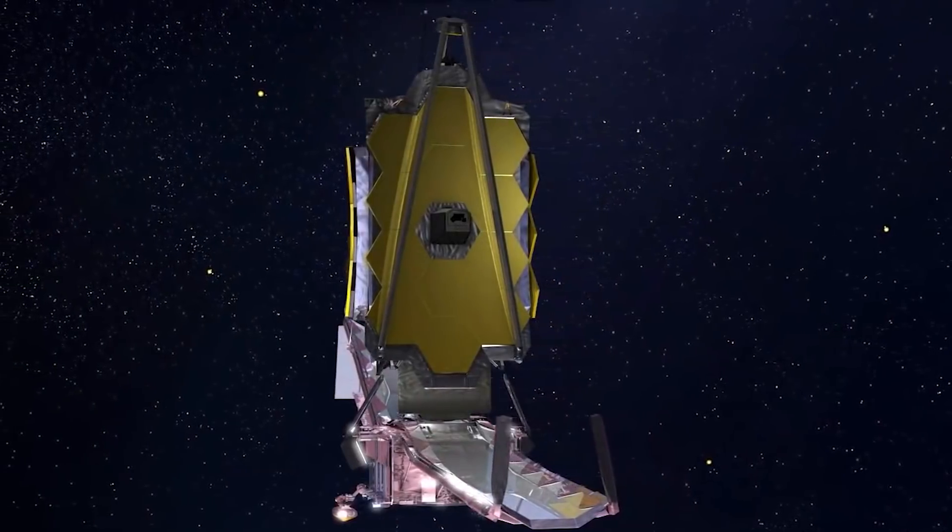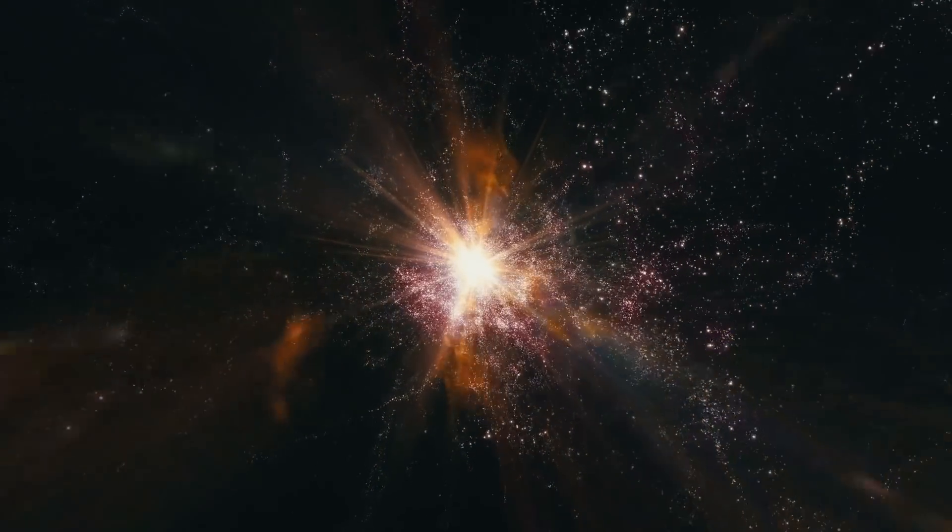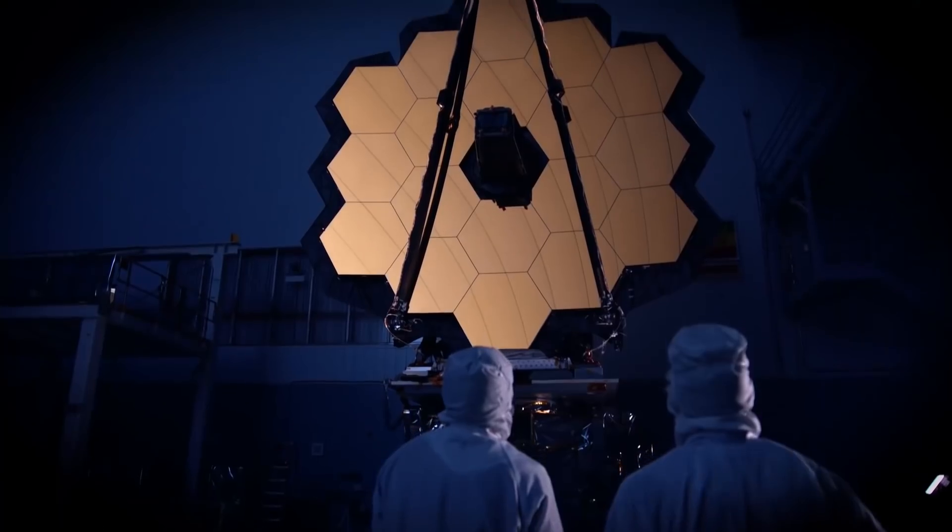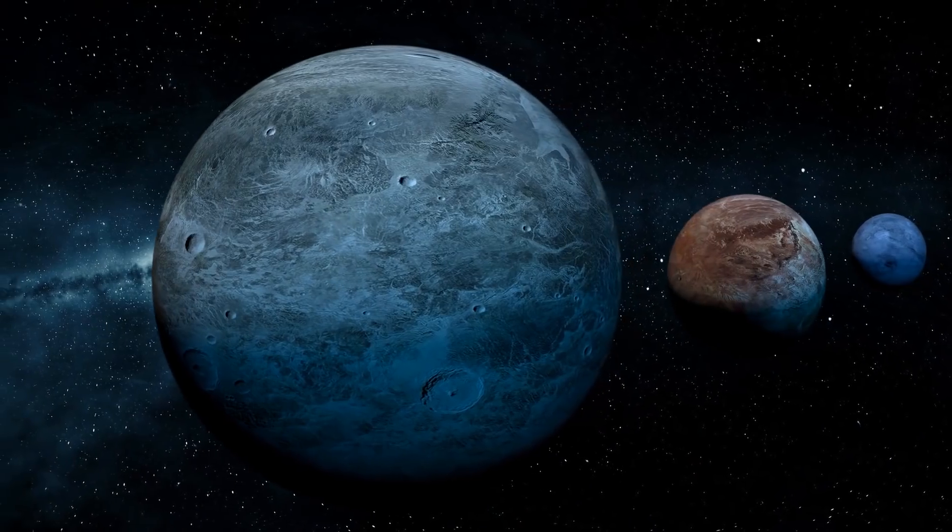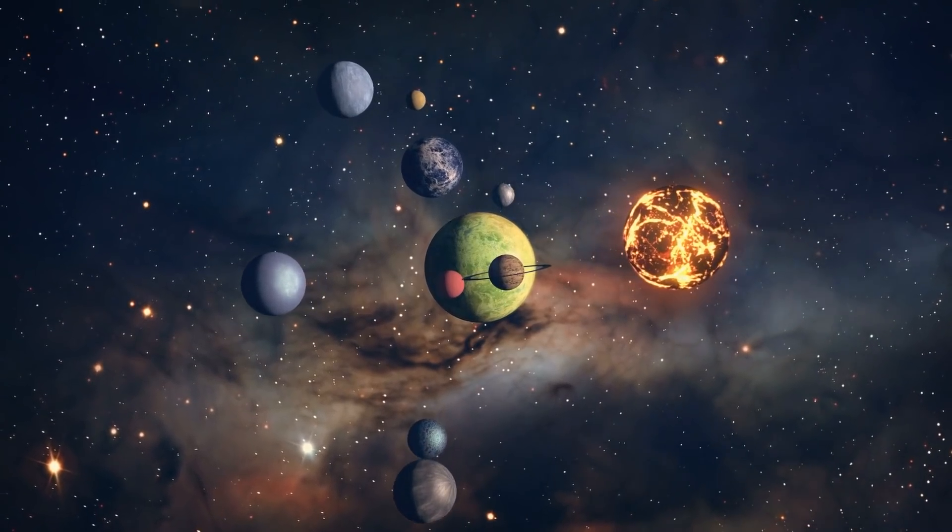Number three, the telescope will be able to see through astronomical dust, which will help us understand the formation of our solar system. And number four, the telescope will be used to find life on other planets, which ultimately is its biggest aim.